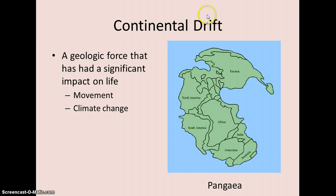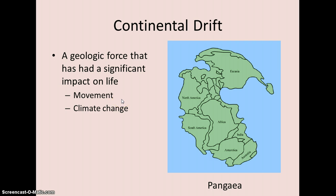Some other processes that have impacted this include continental drift — at one point you had a supercontinent, Pangea, and it began to break up into separate plates and move around to different parts of the planet, further north away from the equator, so land ended up in cooler parts of the world.